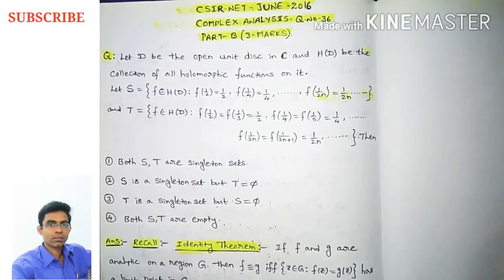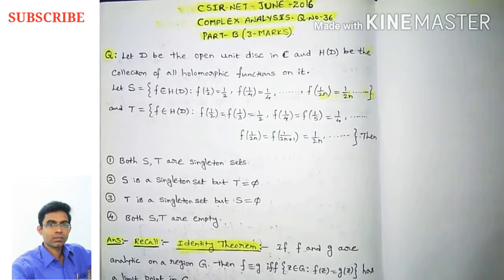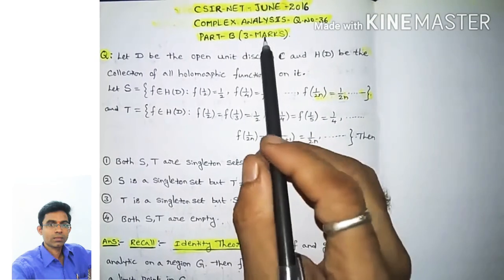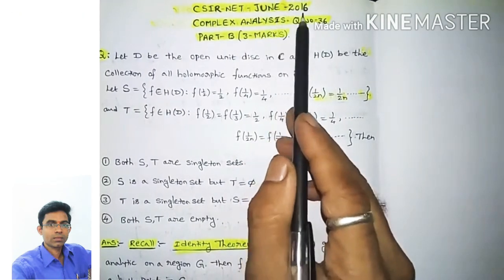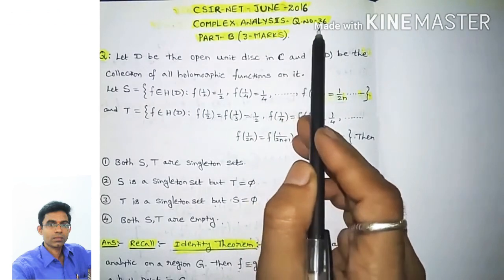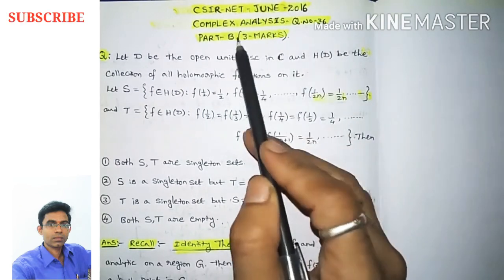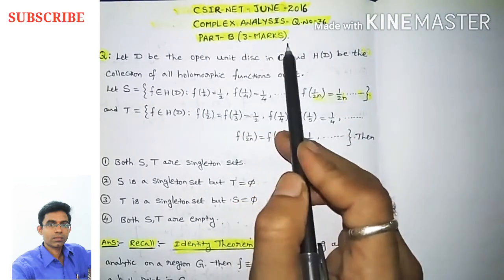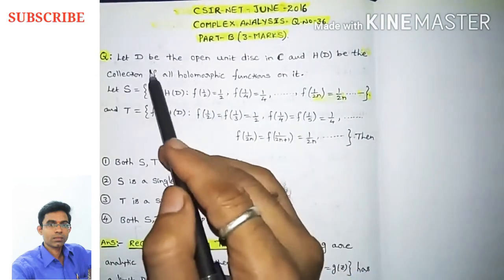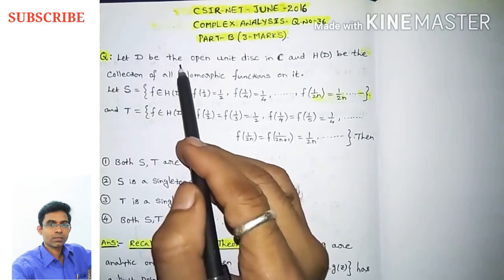Hi everyone, this is Ram Krishna, welcome to my channel. In this video I'm going to discuss CSIR Net June 2016 complex analysis, question number 36 from Part B, three marks.